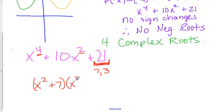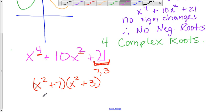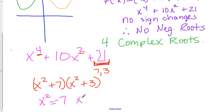And so then we can write x-squared plus seven and x-squared plus three. And now from this once you have it in factored form you know then that x-squared equals a negative seven and x-squared equals negative three.